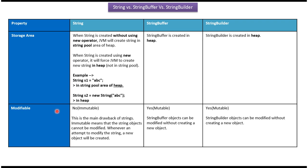Property is modifiable. String is immutable, so once a string object is created, it cannot be modified. Whenever an attempt is made to modify the string, a new object will be created. String buffer is mutable — string objects can be modified without creating a new object. String builder is also mutable — string builder objects can be modified without creating a new object.